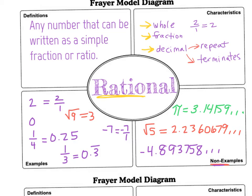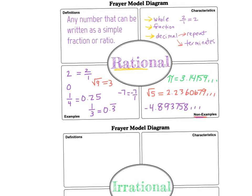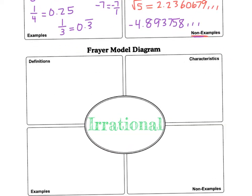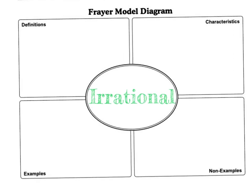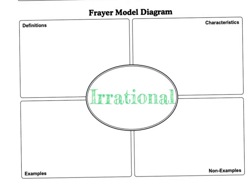And then we will move down to our second frayer model for irrational. See the ratio there? The ir means it's not a ratio. So let's fill in our definition first. An irrational number is a number that cannot be written as a fraction or ratio.